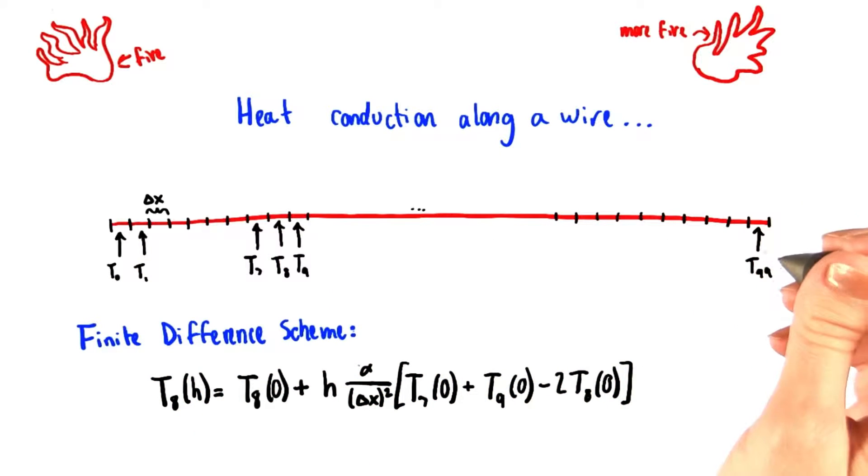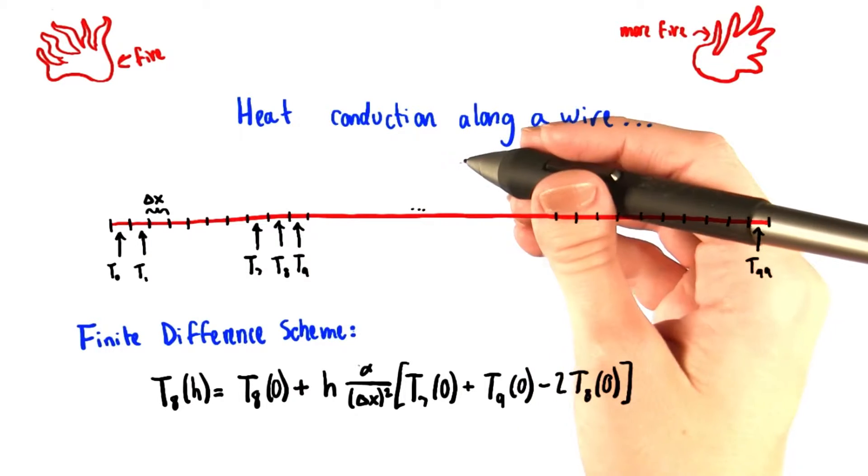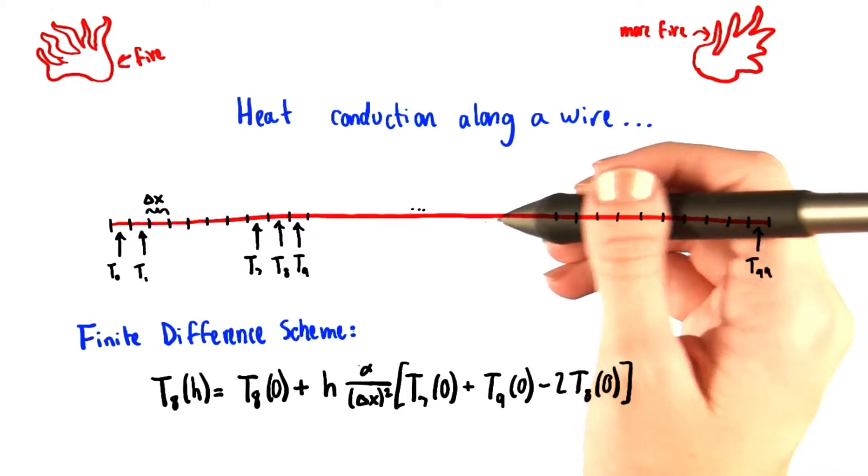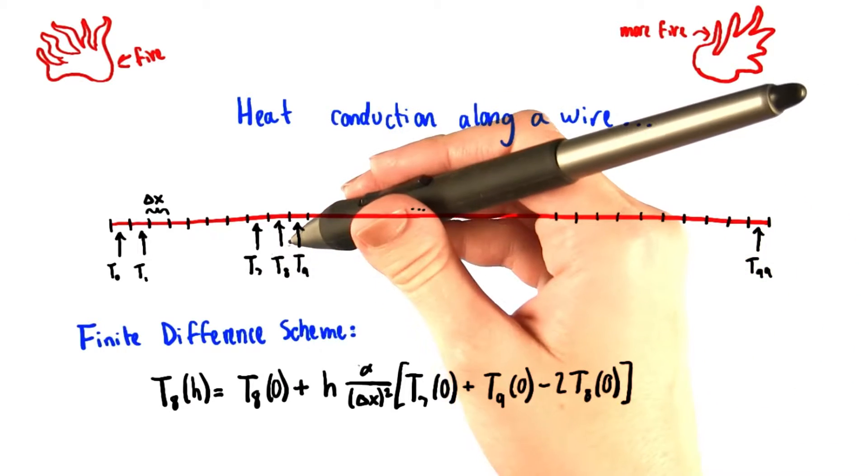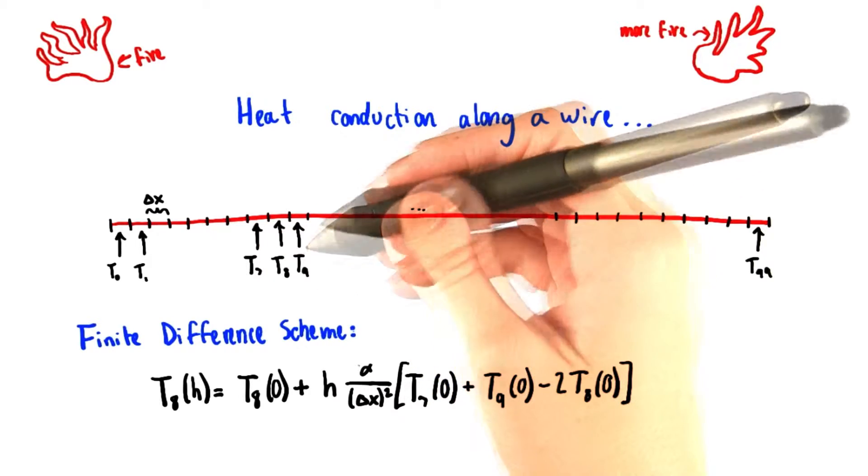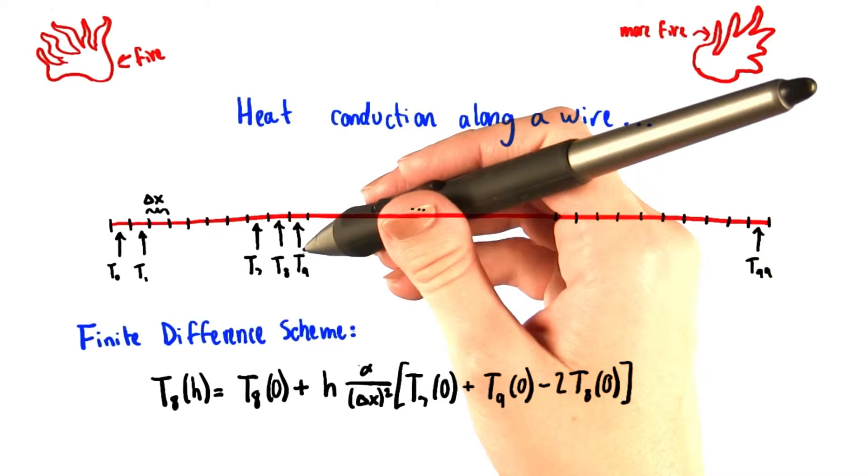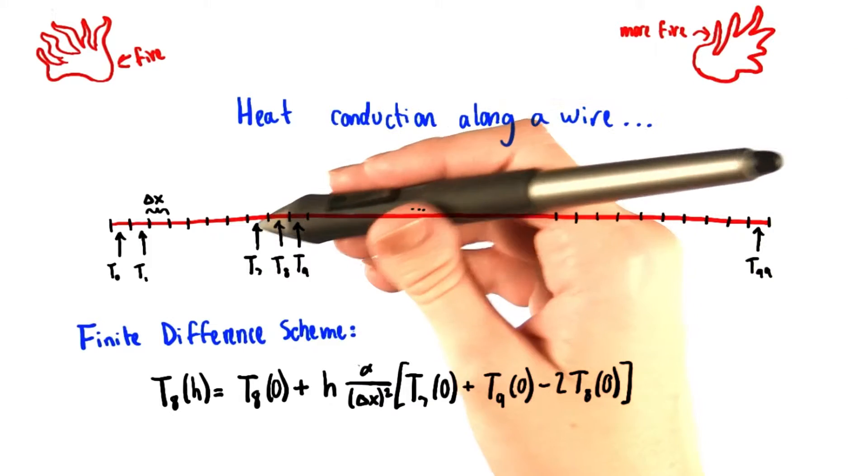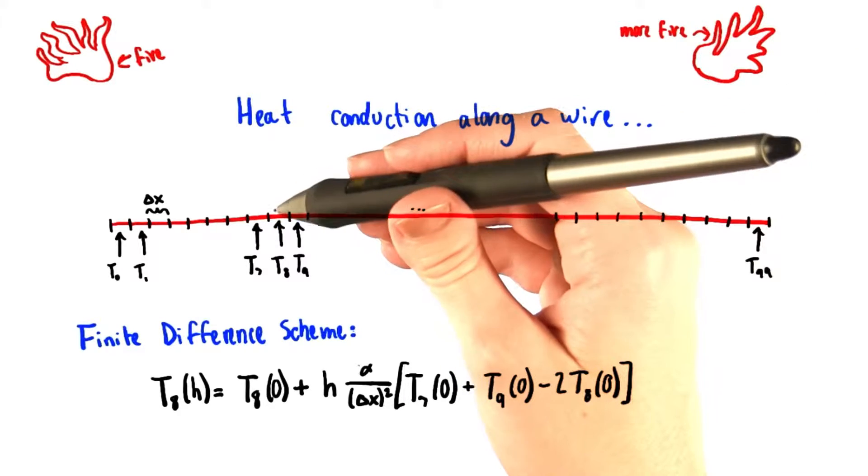We can then measure the temperature of each chunk and label that with a proper number. For example, the temperature in the last chunk is labeled T99. As you already heard from Jorn, the temperature in any given segment, let's take the eighth segment for example, depends on the temperature in the surrounding two segments. Any segments that are touching one another are going to feed energy into each other. So the seventh and ninth segments can both feed energy into the eighth.